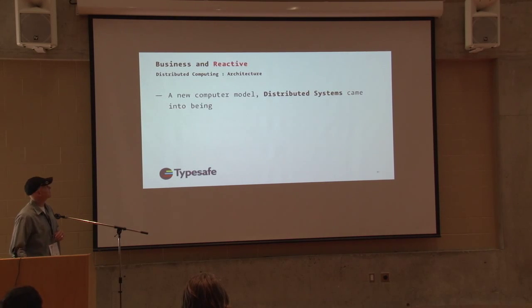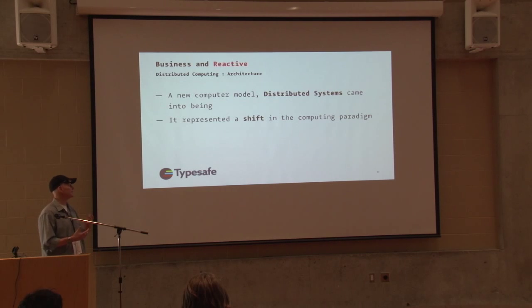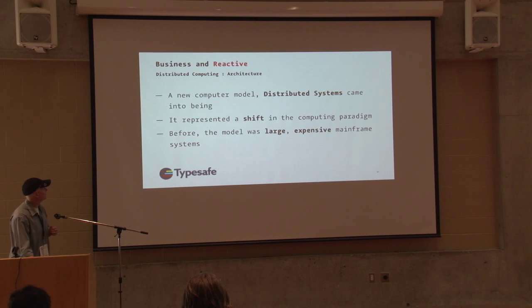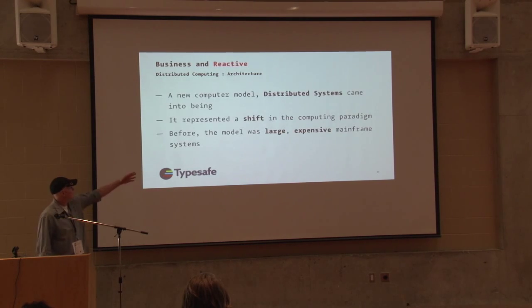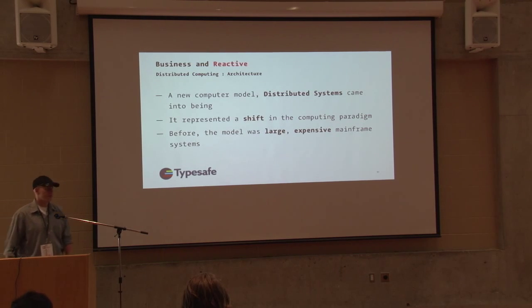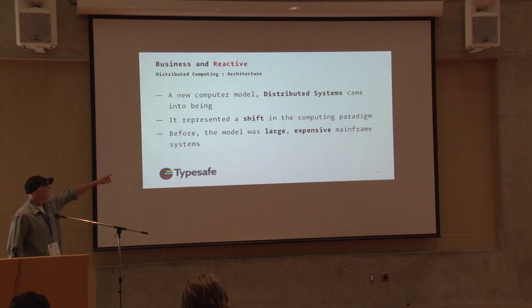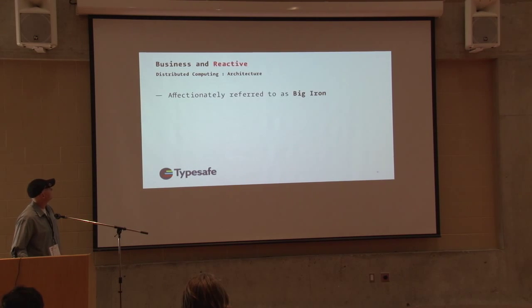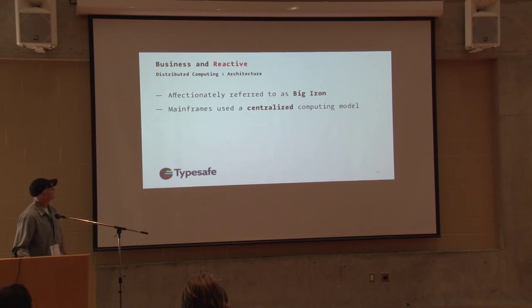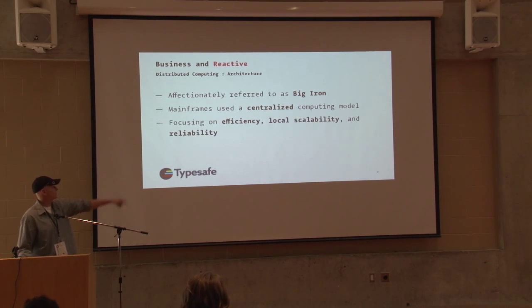Then we had the notion of distributed systems, which represented a pretty significant shift in the way we thought about networking and computers. Before that, primarily we had large, expensive mainframes — Big Iron, as they were referred to. A centralized computing model focused on efficiency and local scalability and reliability. We still use mainframes today and they can be part of a distributed system.